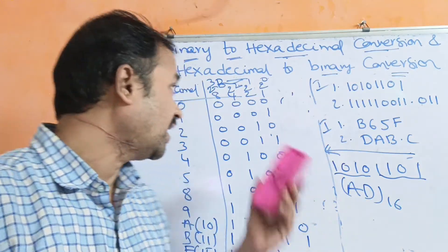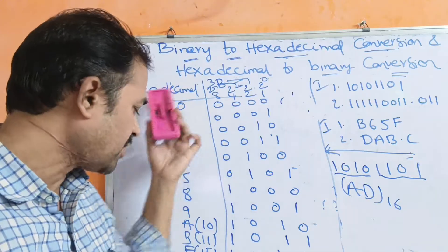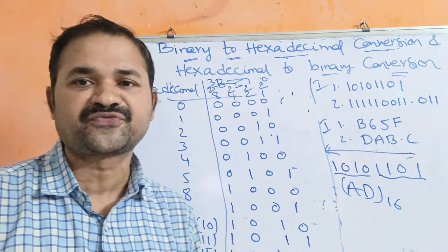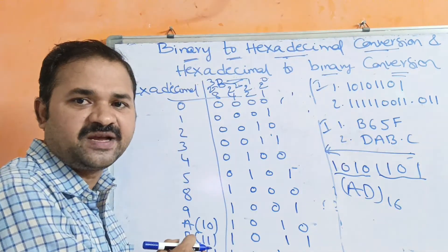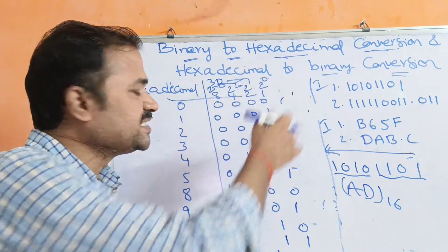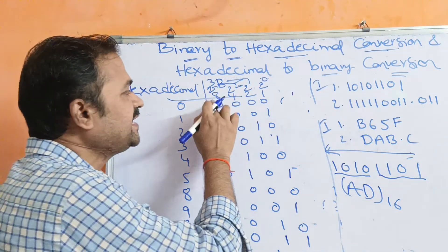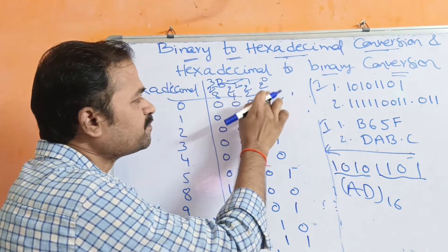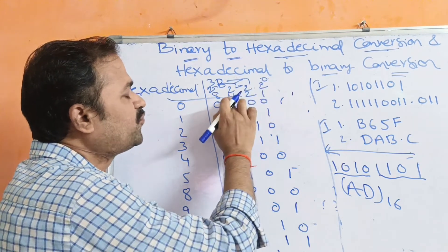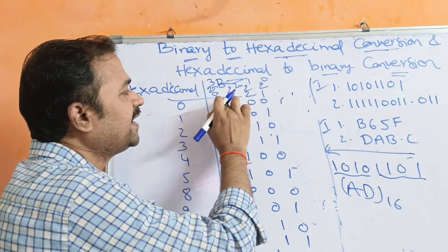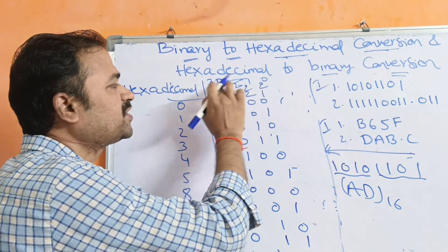First let us write binary notation for the hexadecimal numbers from 0 to 9 and A to F. The first column represents hexadecimal notation. The second column represents binary notation. Binary notation uses 8, 4, 2, 1 notation — that is, 2 power 0, 2 power 1, 2 power 2, and 2 power 3.